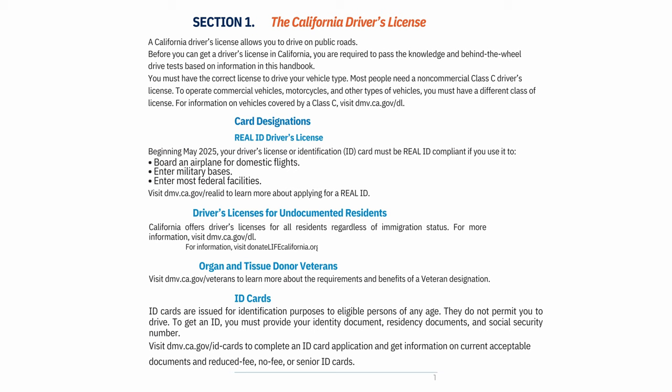For more information, visit dmv.ca.gov/dl. For organ and tissue donor information, visit donatelifecalifornia.org. For veterans, visit dmv.ca.gov/veterans to learn about requirements and benefits of a veteran designation. ID cards are issued for identification purposes to eligible persons of any age — they do not permit you to drive.